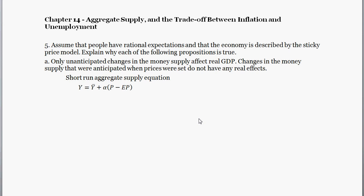All right, welcome. In this question, we are taking a question from MNCU's Macroeconomics, Chapter 14. Chapter 14 is the chapter on aggregate supply and the trade-off between inflation and unemployment. In the 8th edition that we're using, this is question 5.